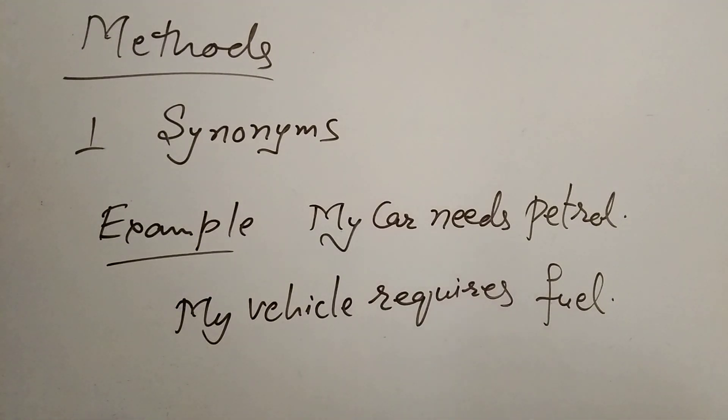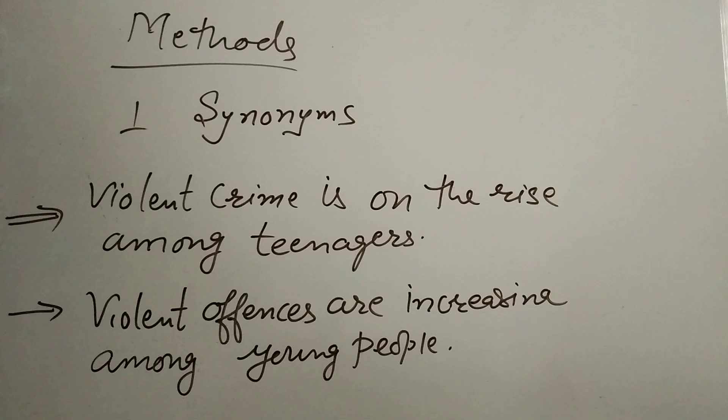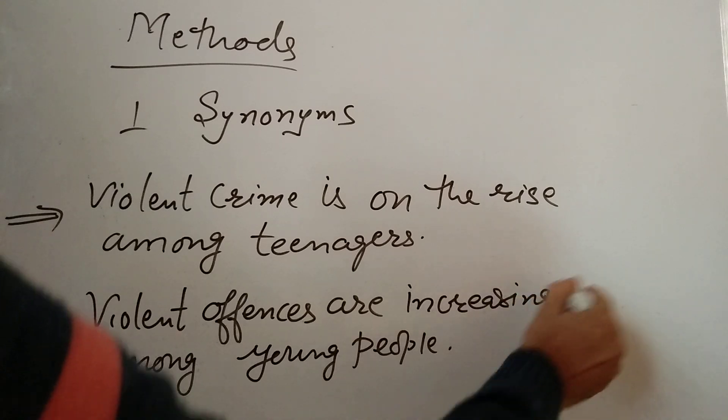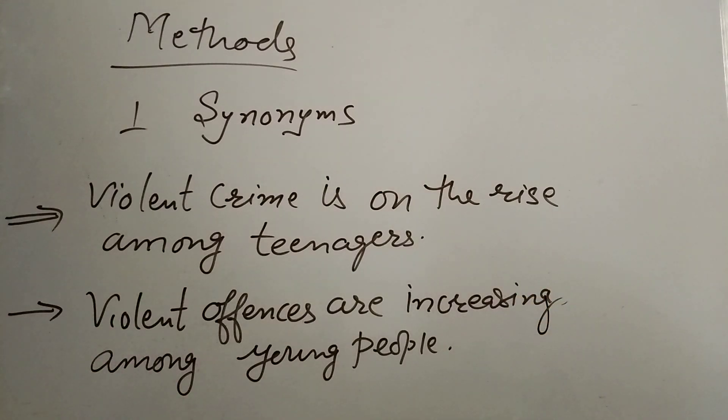Let's take one more example. In the second example, violent crime is on the rise among teenagers. Crime has been changed with offenses, is with are, and on the rise means increasing among young people. Teenagers means young people or youngsters. So, sentence will become like that, violent offenses are increasing among young people.